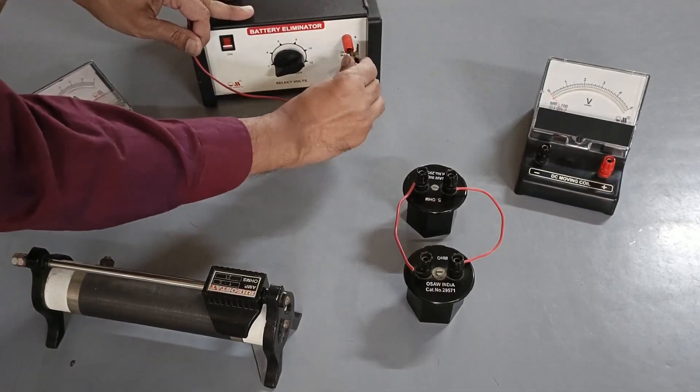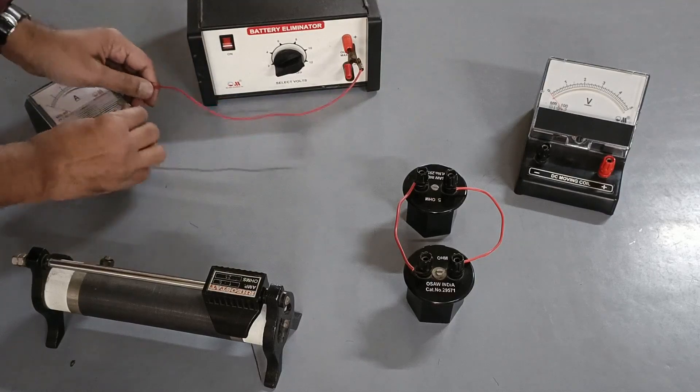Connect the positive terminal, the red one of the battery with the positive terminal of the ammeter.